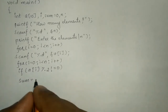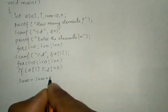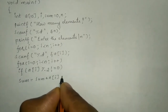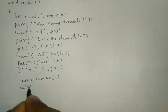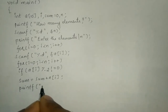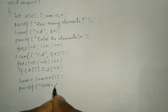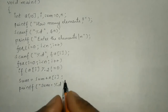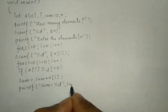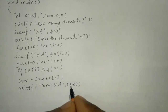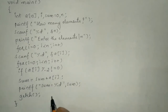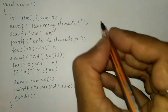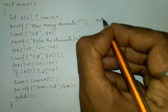So I am going to write: sum is equal to sum plus a of i, and then put a semicolon. Now I am going to write a printf statement: 'sum is equal to %d', end double quotation mark, comma, and write the variable sum. Next we will write the getch function and the curly closing brace.